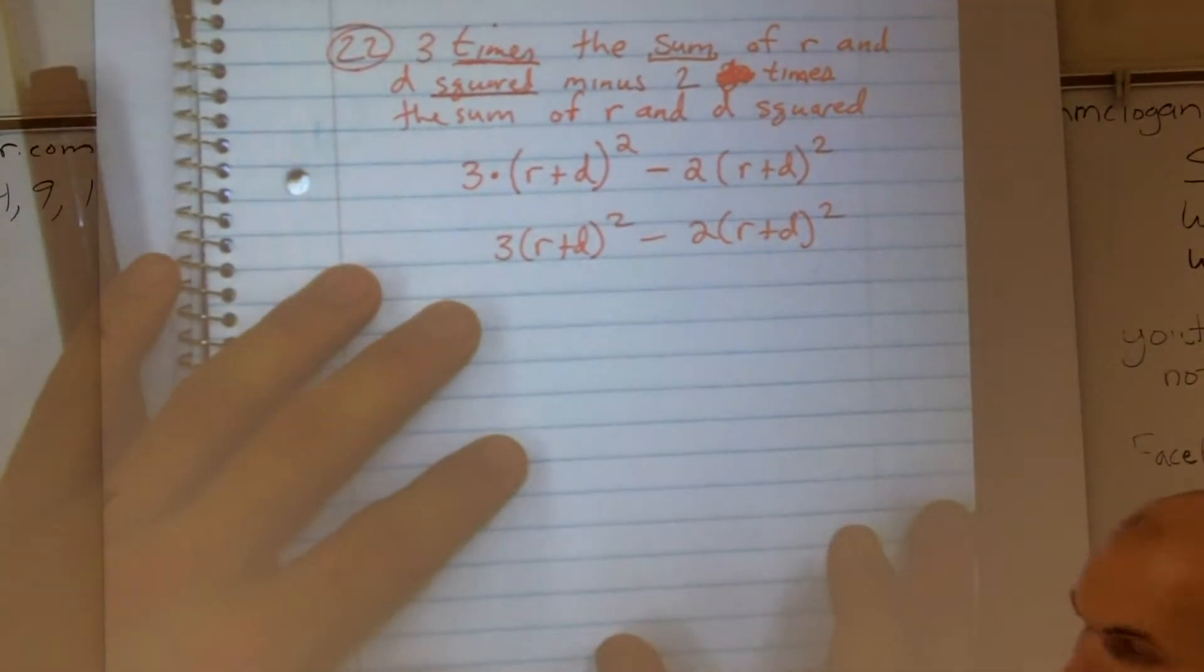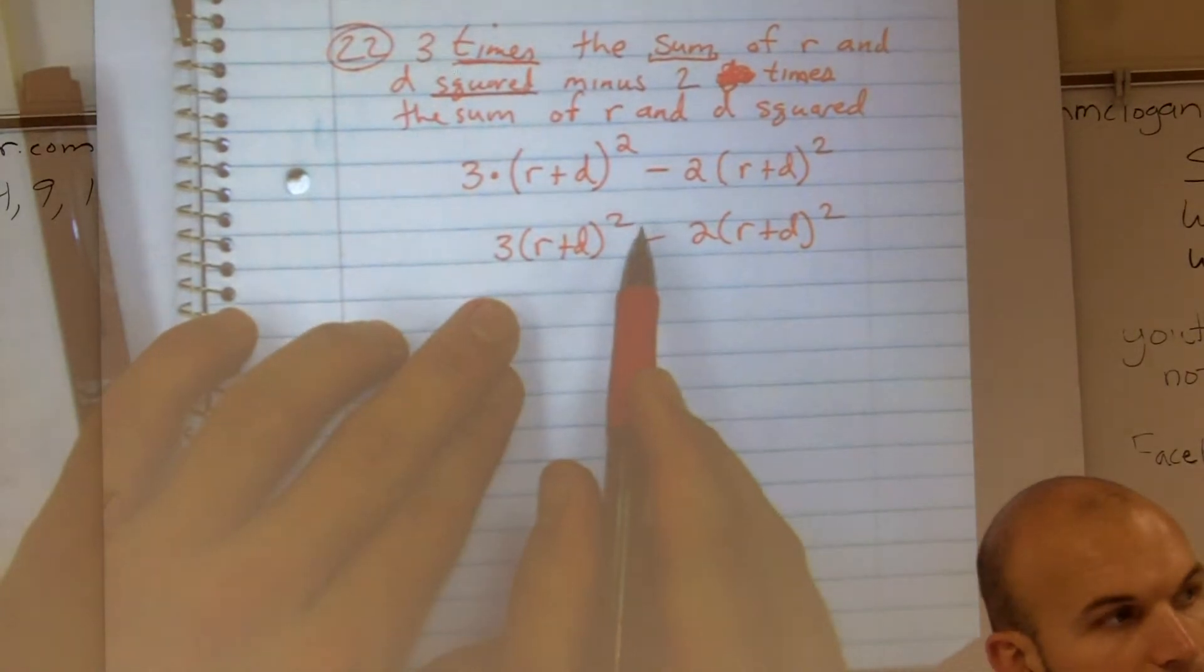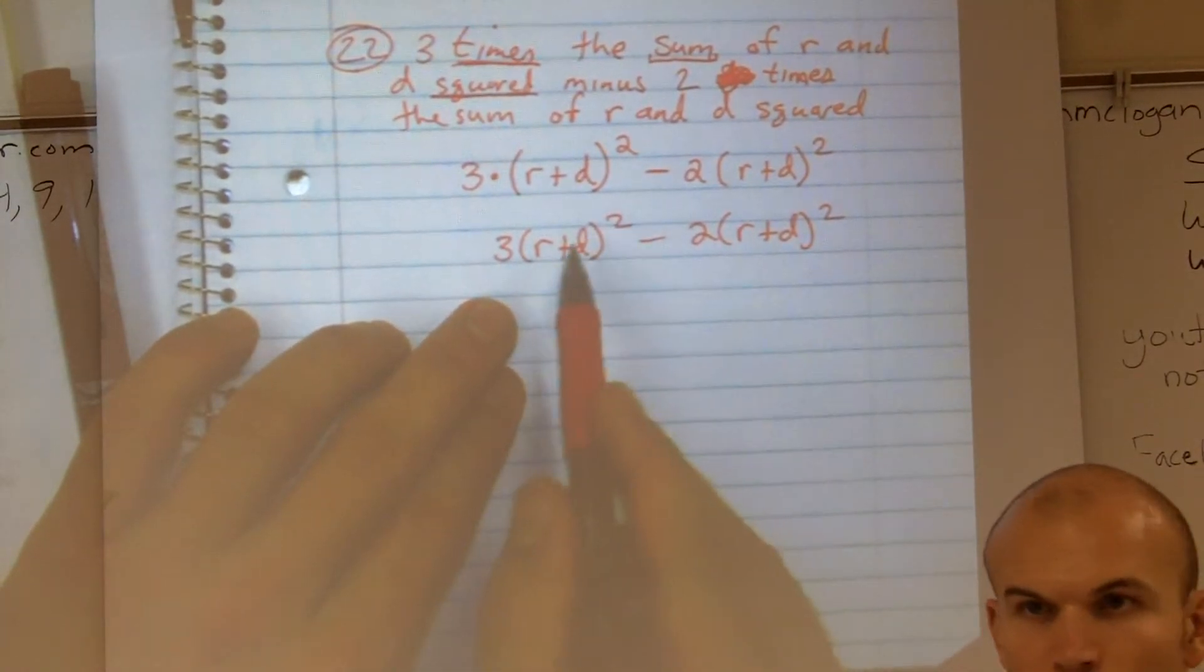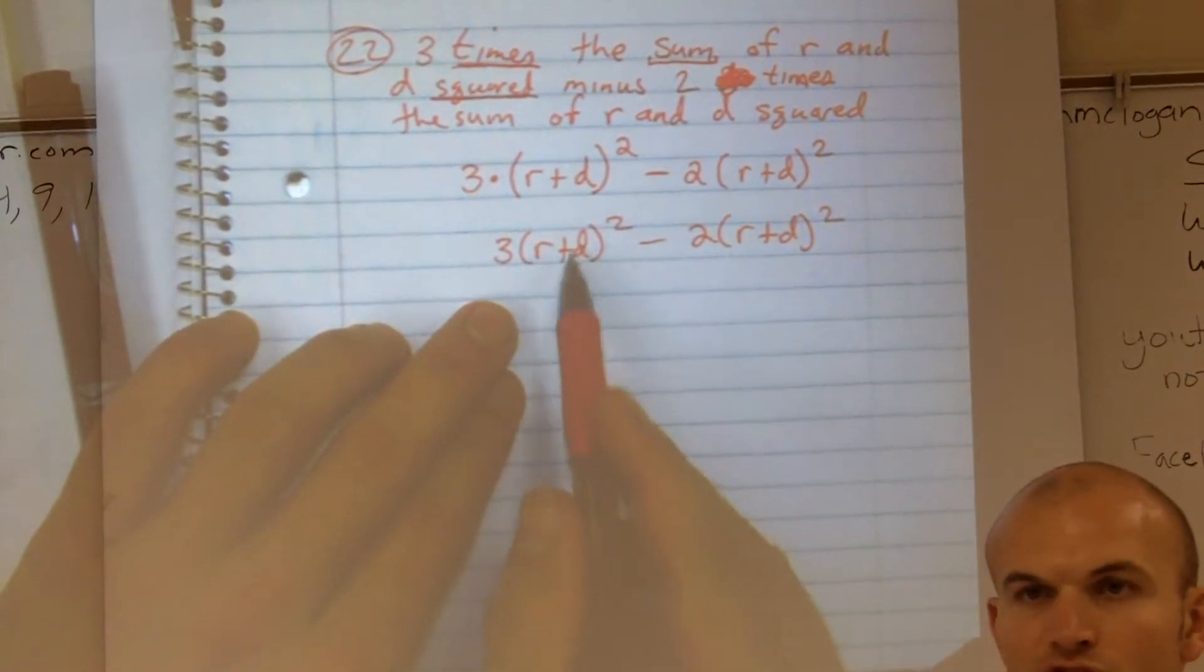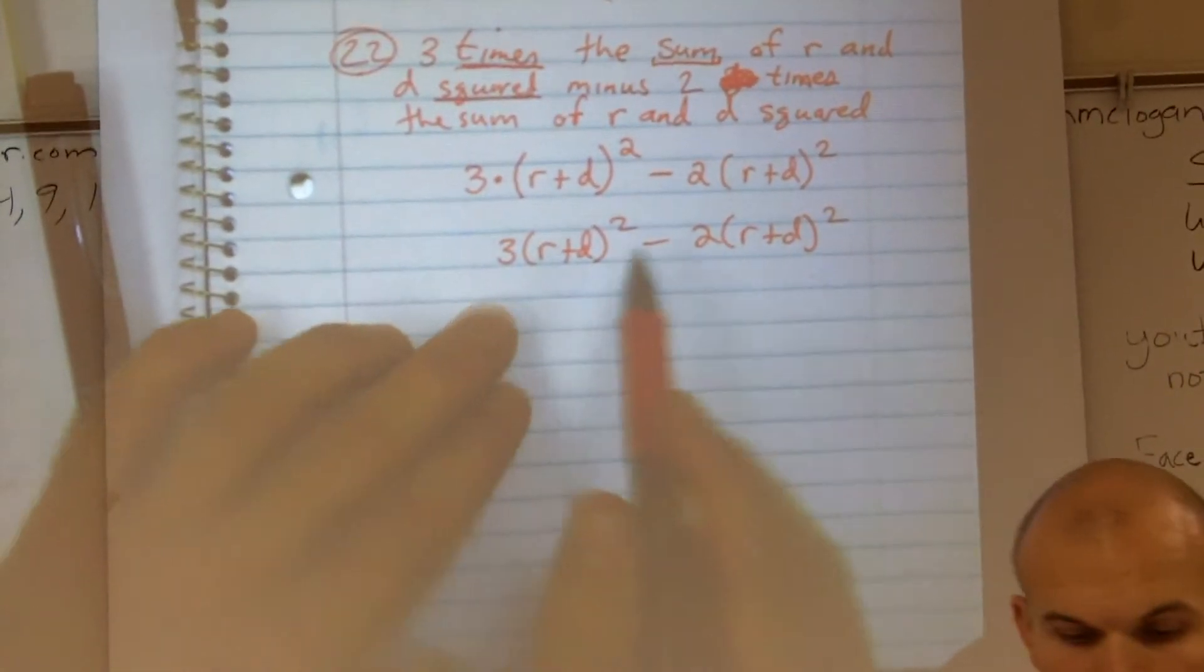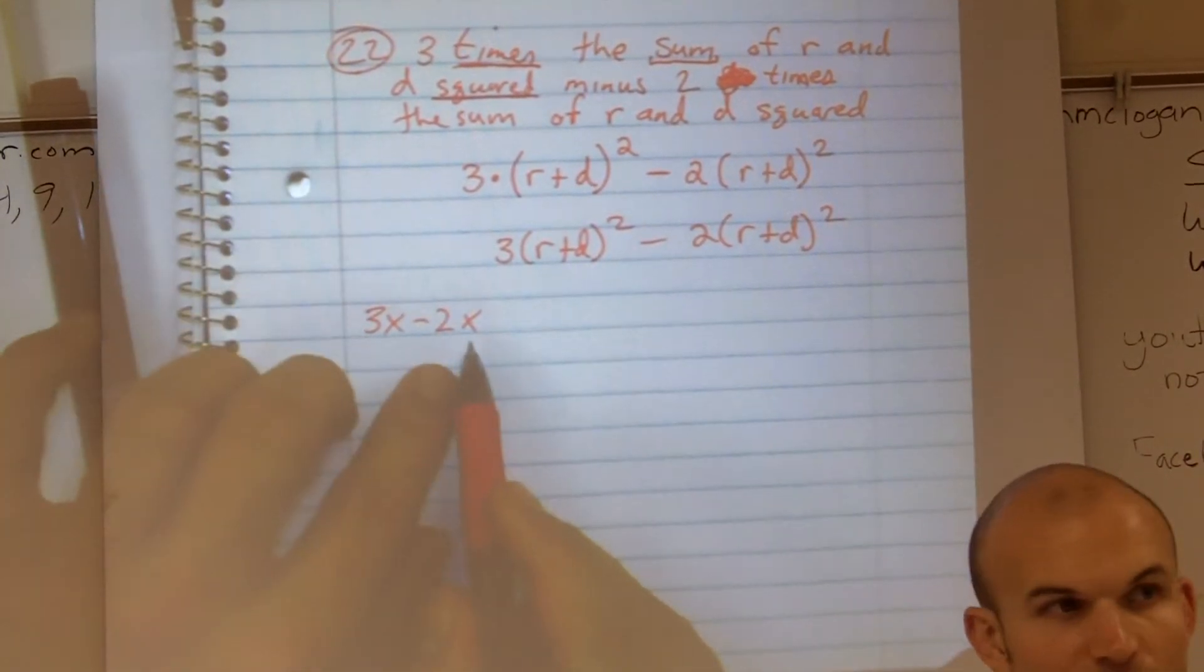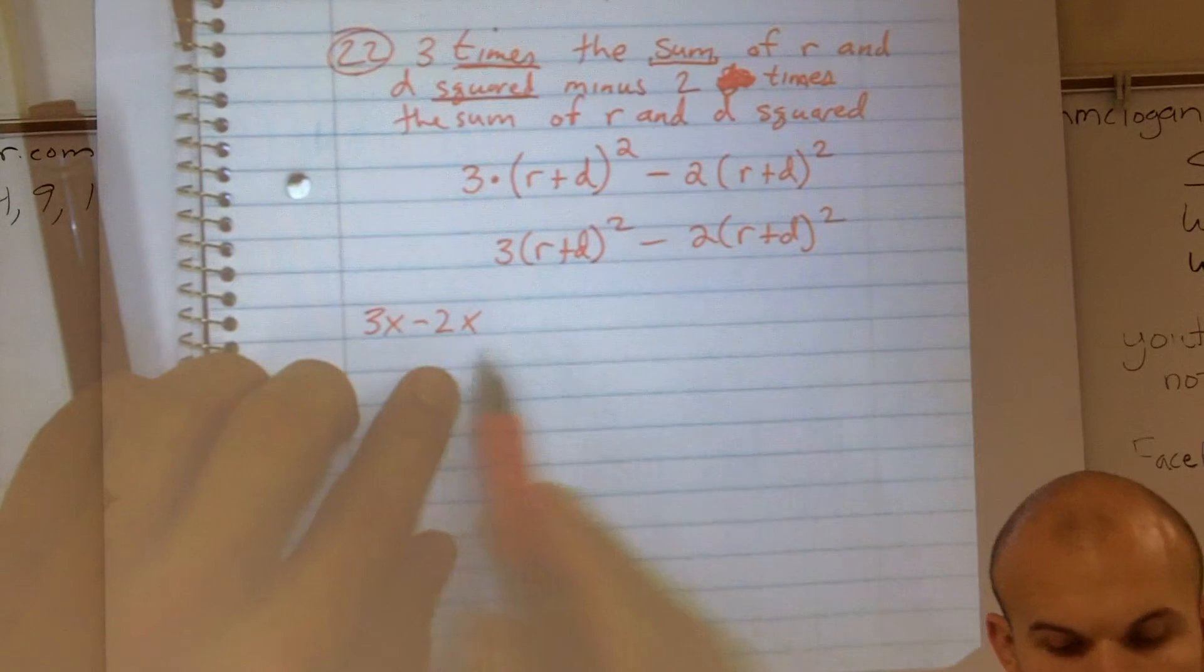Now, this might be a little confusing, but if you guys can remember, R plus D squared, we don't know what that represents, right? We don't know the value of that. So let's just treat it just like any other variable that we don't know the value of. So I'm pretty sure most of us could do this. Three X minus two X equals what? X, right?